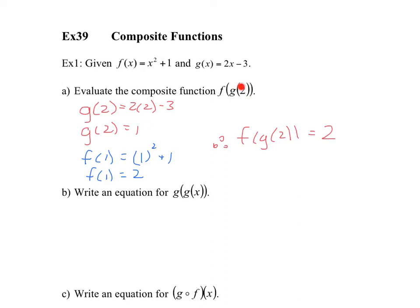Because when you plug in 2 into g, you get 1. And when you plug in 1 into f, you get 2. So f of g of 2 is equal to 2.